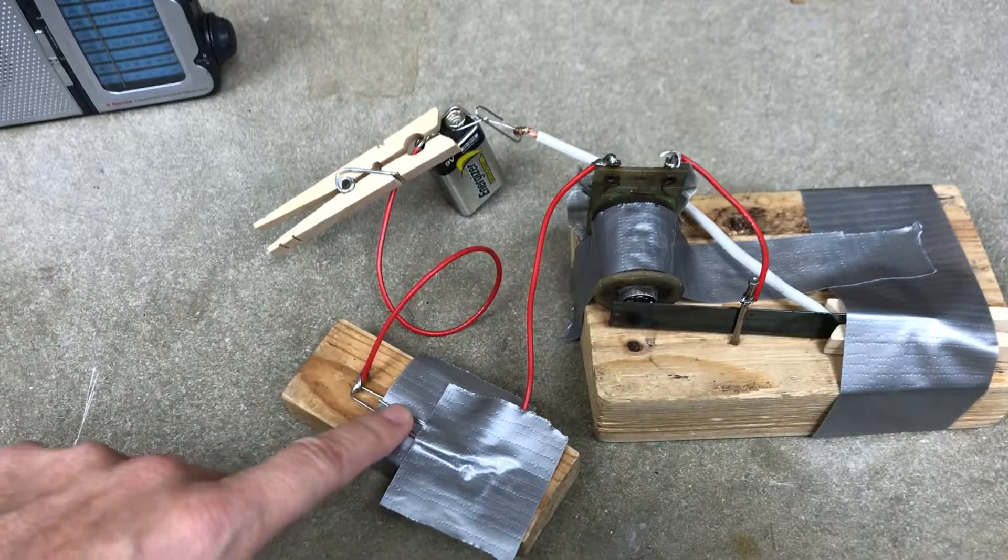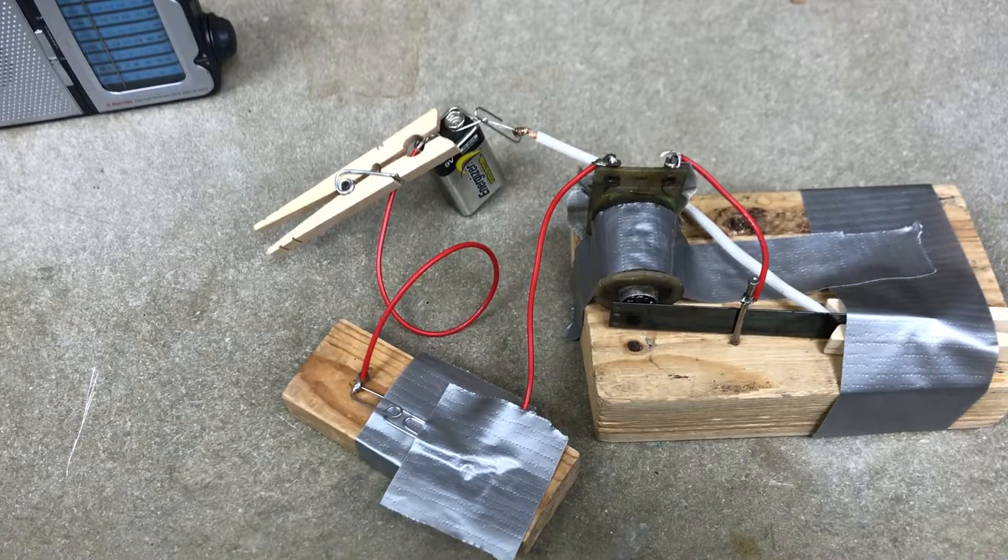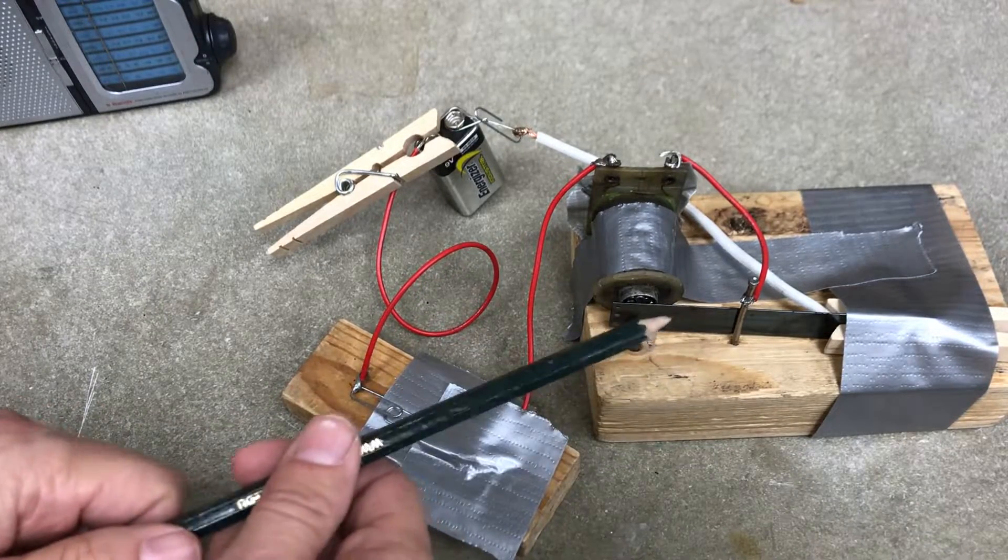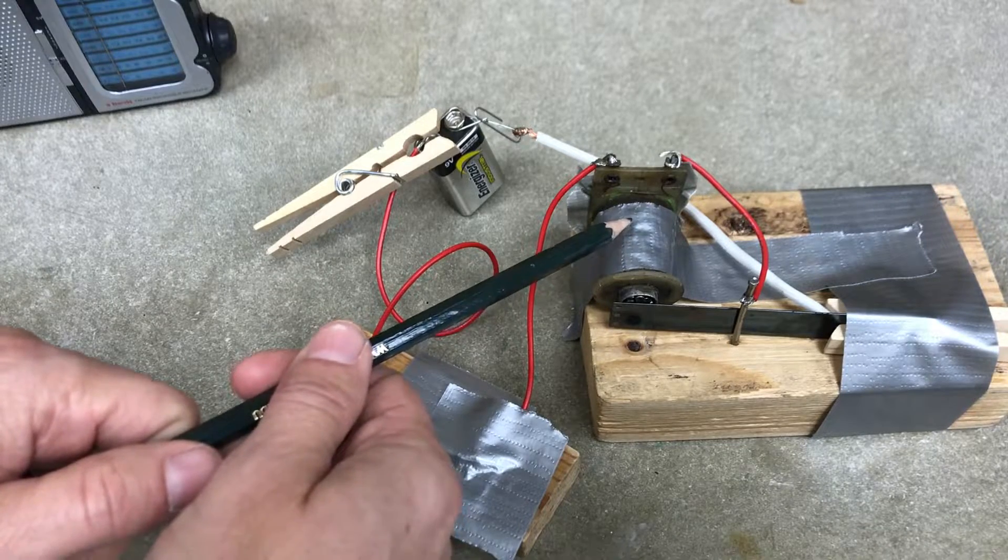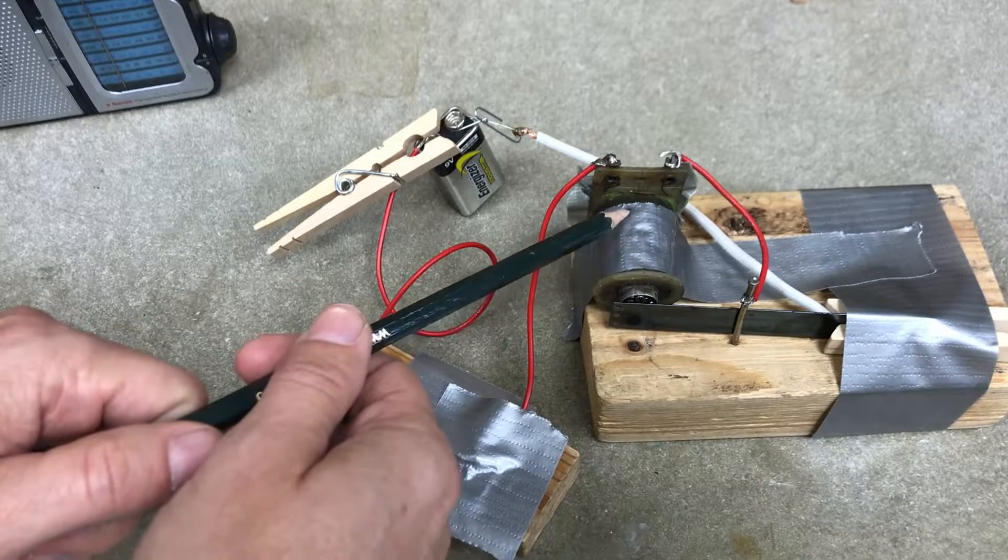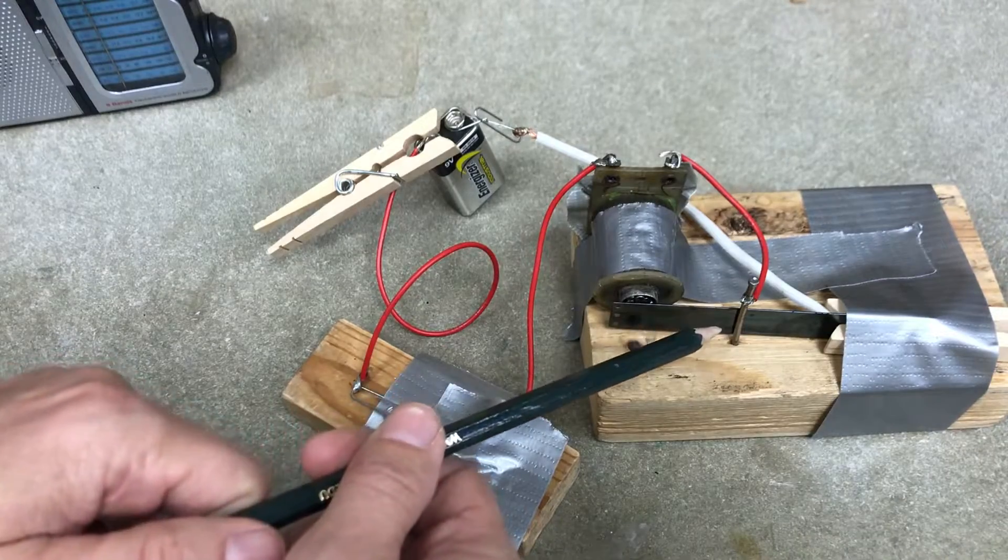So let's run it, okay, and it does this changing current makes a voltage and the faster you change the current the greater the voltage and that creates a spark.